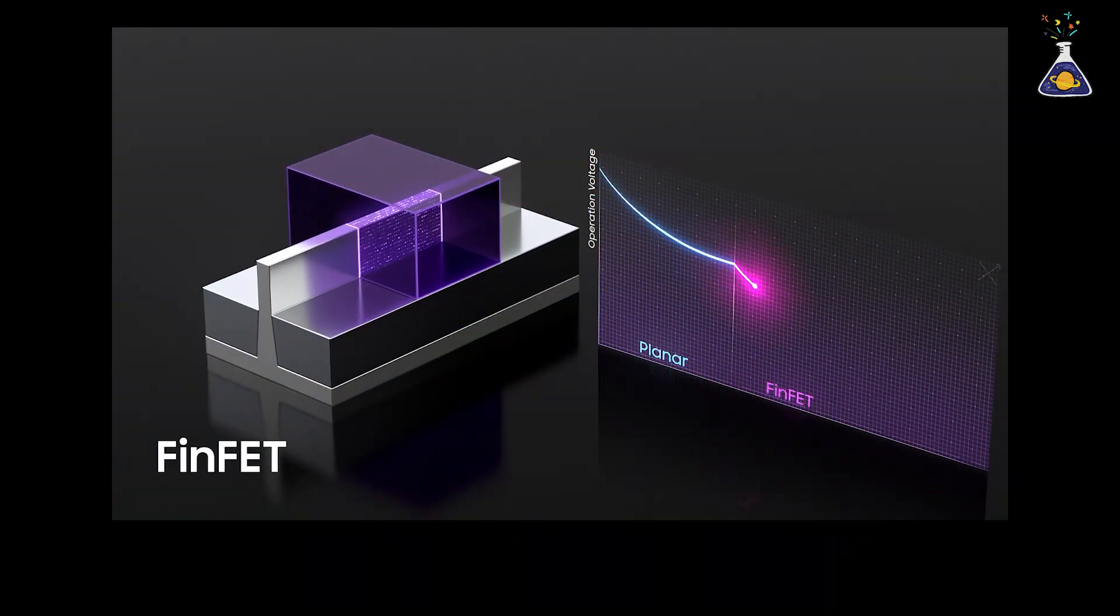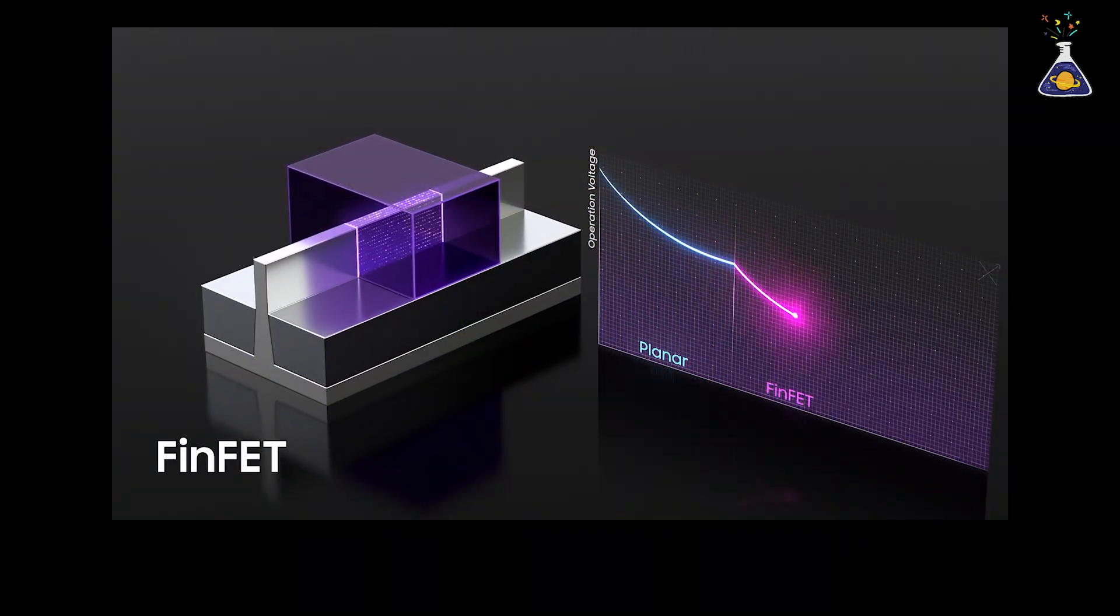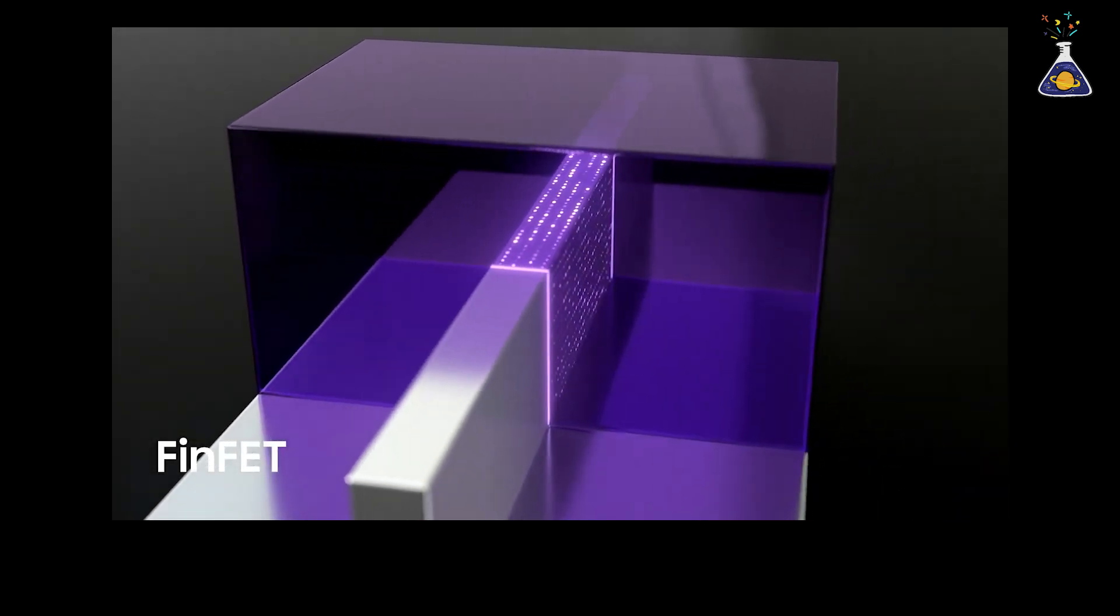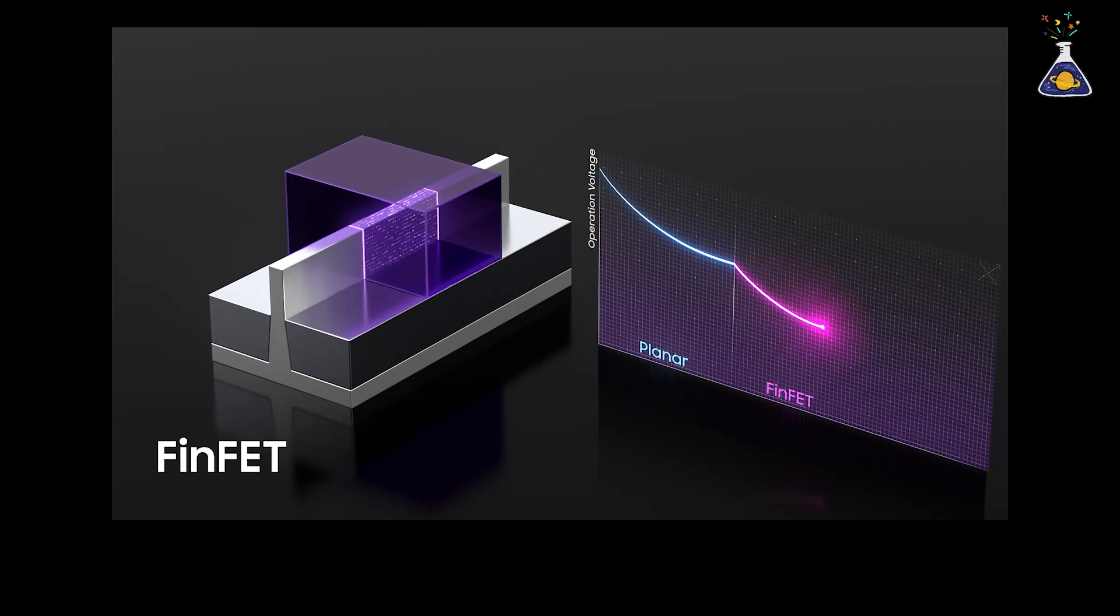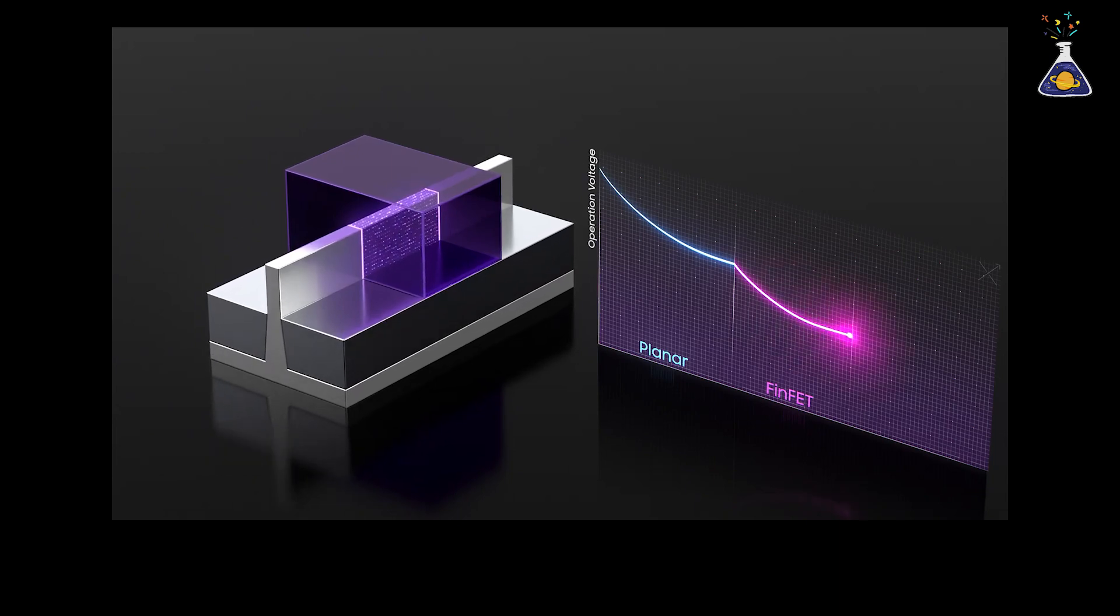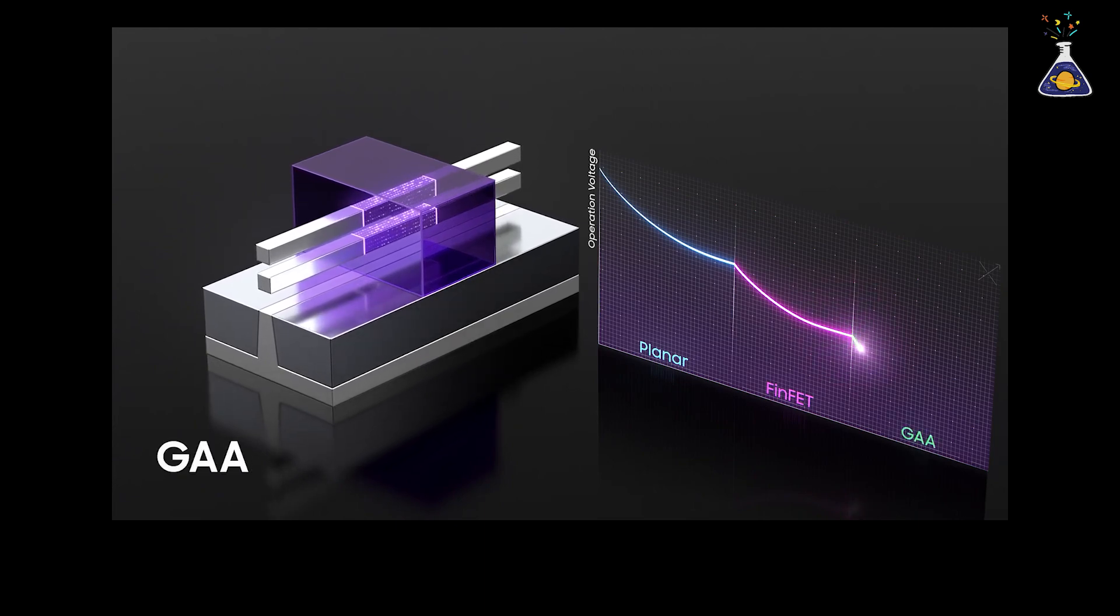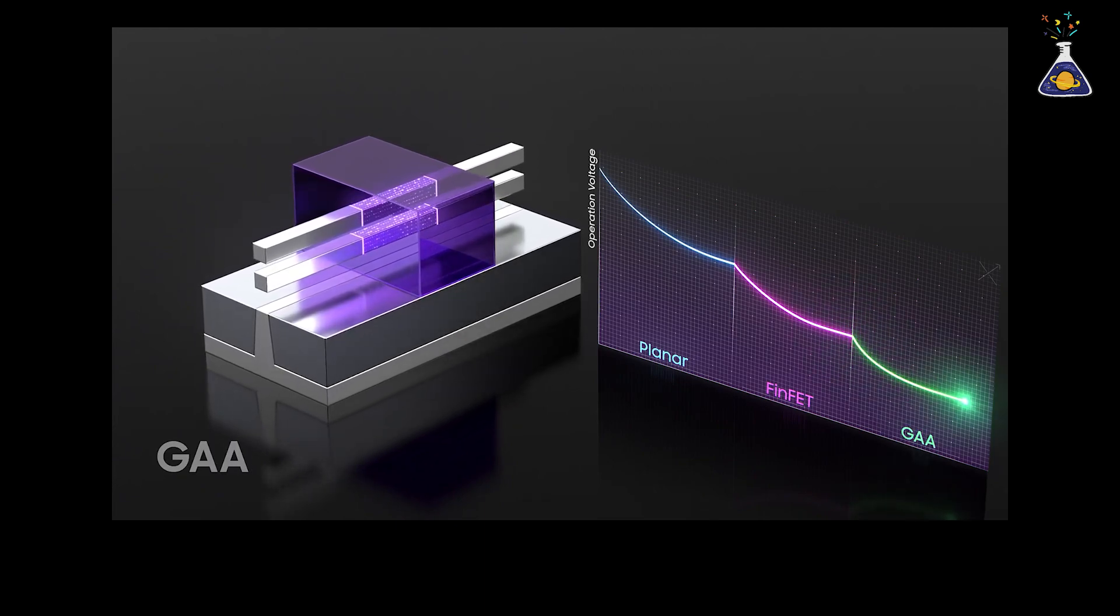Meanwhile, TSMC has focused on refining its FinFET technology, where the transistor's current channel is wrapped on three sides, allowing it to maintain stable yields through the 3-nanometer node. However, even TSMC recognizes the limitations of FinFET and plans to adopt GAA technology, starting with the 2-nanometer process.